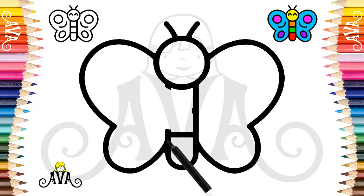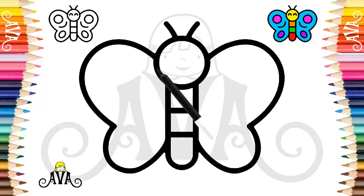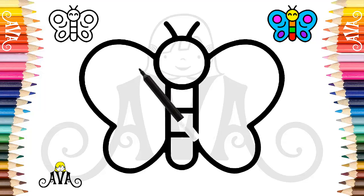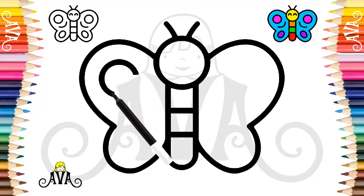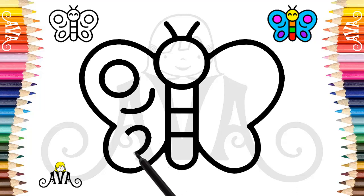Did you know that butterflies go through a process known as metamorphosis? They go through different stages of life, from the caterpillar to becoming an adult butterfly. We finished the body! Very well! It was very easy so far. Let's draw the details of her left wing. Let's start with the top circle. We draw the dividing line of the wing. Finally we draw an oval detail. It was very good! Our butterfly is already beginning to appear.